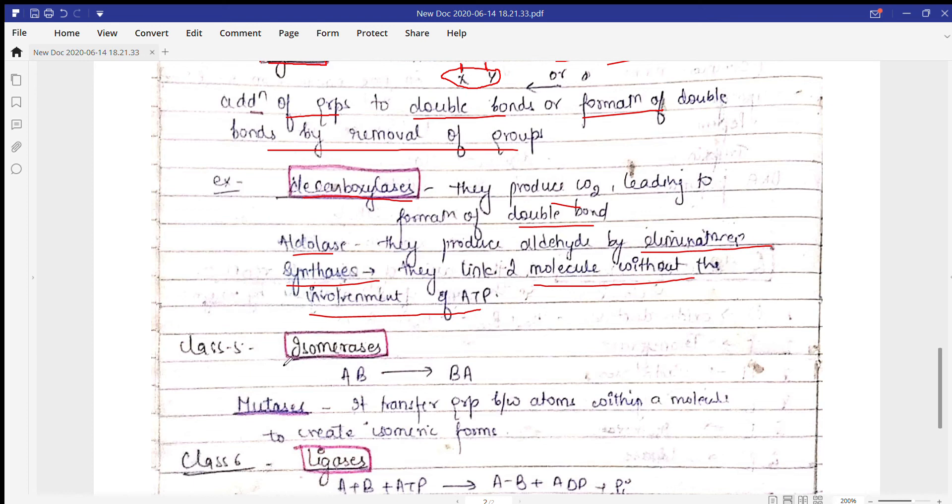Next is isomerases. Isomers are molecules which have the same formula but different confirmation. AB is changed into BA. These have the same structures, but their confirmation changes. You can see AB has one orientation and BA has a different orientation.